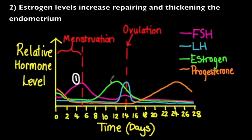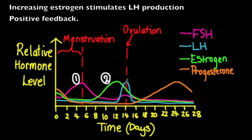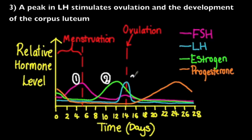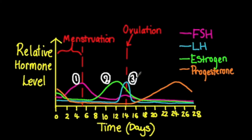As estrogen levels increase, this will repair and thicken the endometrium. There is also a positive feedback relationship between estrogen and LH, just as there was between FSH and estrogen. So increasing levels of estrogen will result in increasing levels of LH and ultimately a peak in LH production. When LH peaks, this stimulates ovulation — the release of the ovum from the ovary to the oviduct — and it also stimulates the development of the corpus luteum.